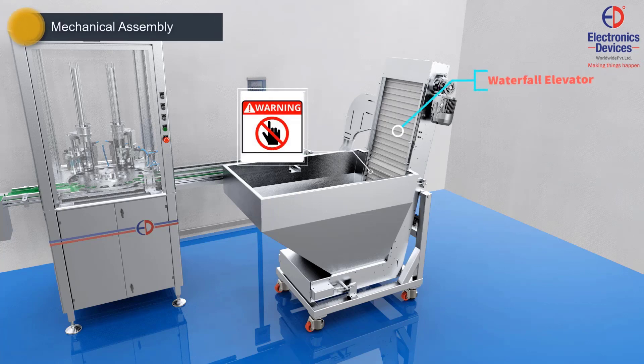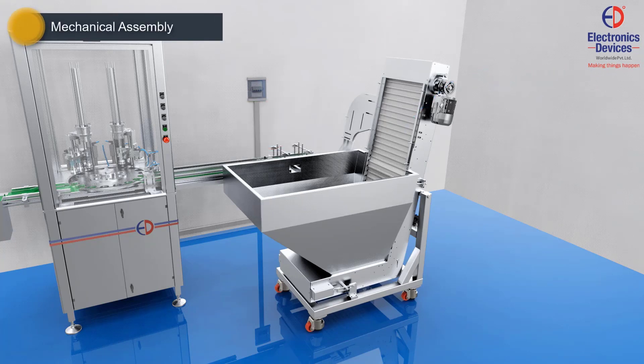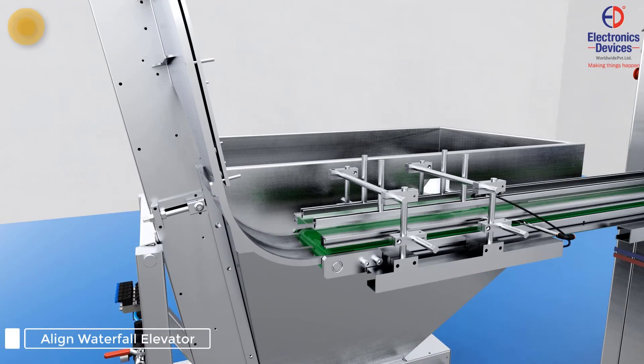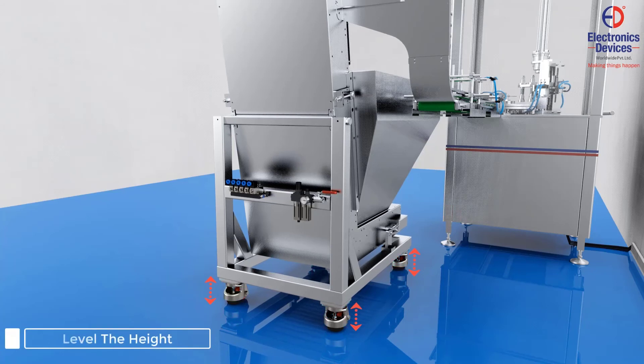Firstly, do the mechanical assembly of the waterfall elevator. Align the waterfall elevator and adjust the height to level it with the in-feed conveyor.